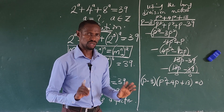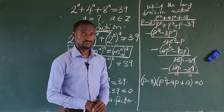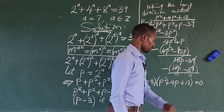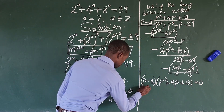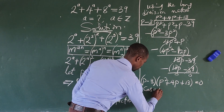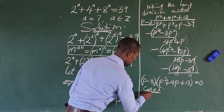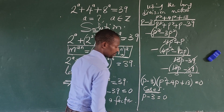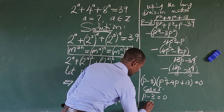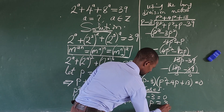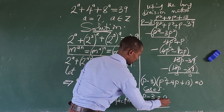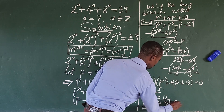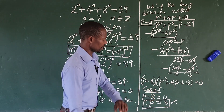So we have two cases from here, because we apply the zero product rule — we equate each factor to 0. In Case 1, we have p minus 3 equal to 0. Therefore, we have p equal to 3. So this is our p1 — we have p1 equal to positive 3.